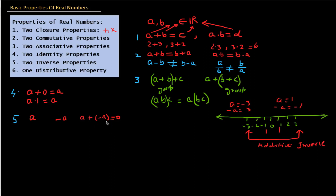Adding A and minus A is the same as subtracting A from A. So whether written as A plus (minus A) or A minus A, in both cases the result will be 0. For example, adding minus 3 to 3 gives 0, or subtracting 3 from 3 gives 0. This is the inverse property of addition.